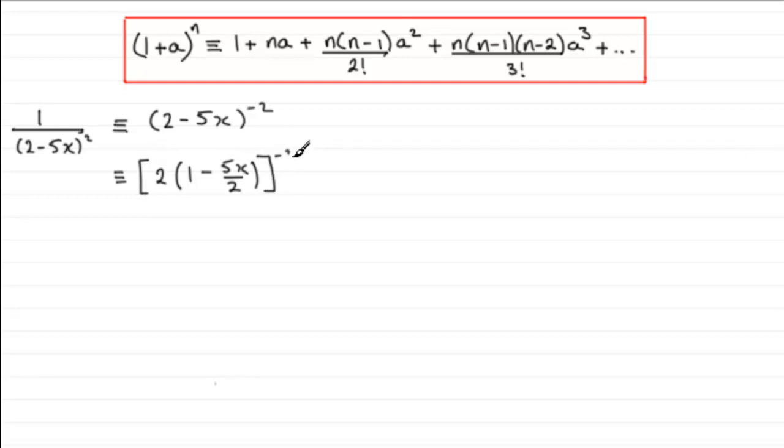Now whenever you've got two or more things multiplied together to a power, then you can write each of them to that power. So this is exactly the same, it's identical to 2 to the power minus 2 multiplied by 1 minus 5x over 2 all to that power minus 2.